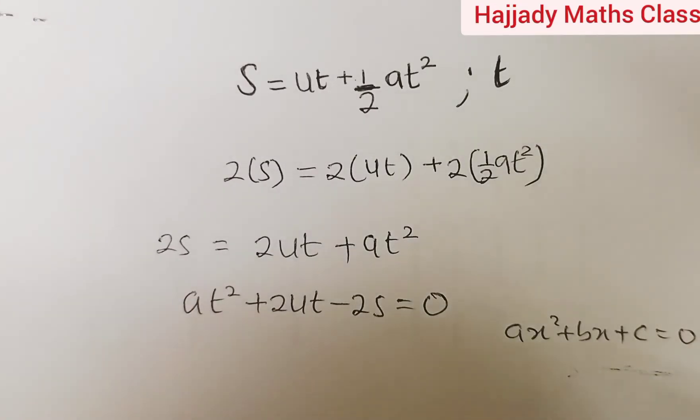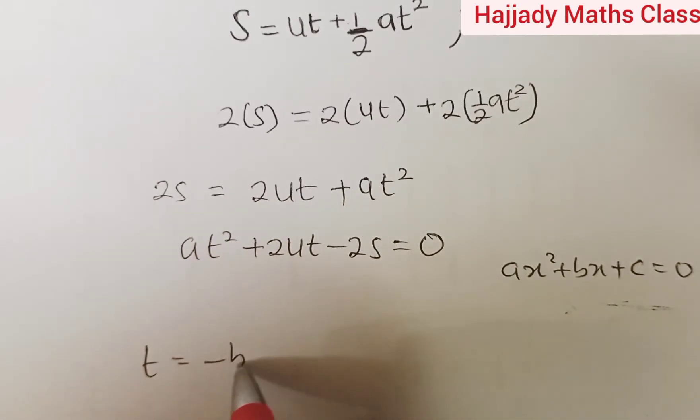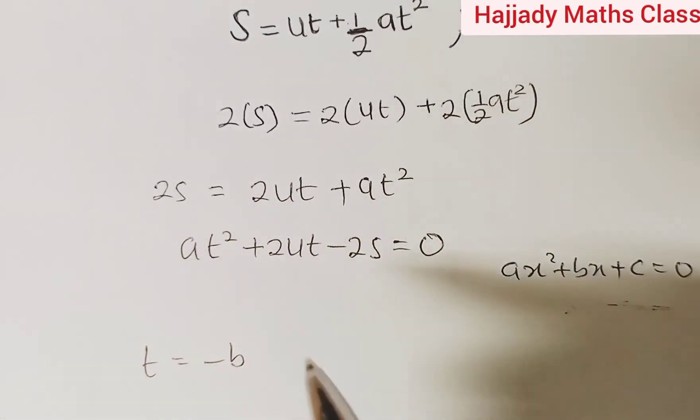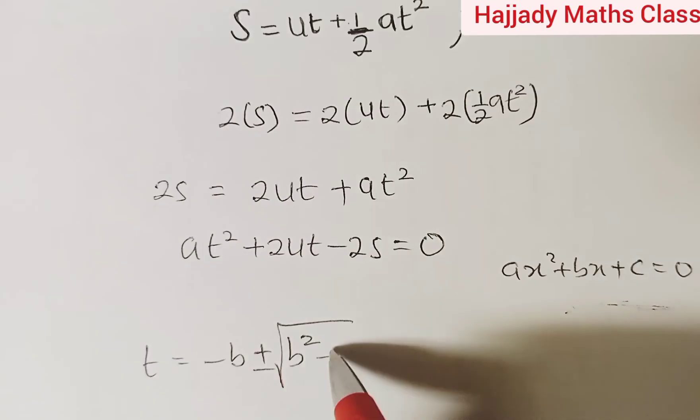And using the quadratic formula approach, the formula for that is t equals minus b plus or minus square root of b squared minus 4ac, everything over 2a.